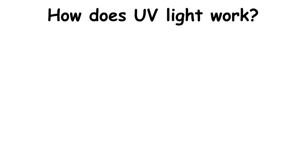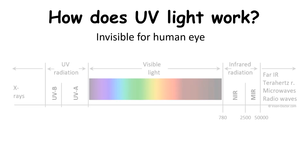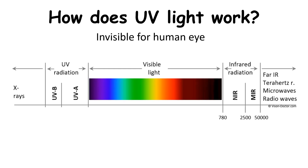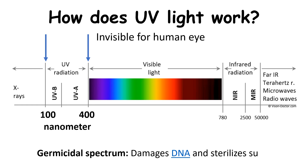Ultraviolet UV light is emitted by our sun, however it's invisible to the human eye. On the electromagnetic spectrum, it's positioned between x-rays and visible light with wavelengths between 100 and 400 nanometers. This spectrum is categorized as germicidal, meaning it damages DNA and sterilizes surfaces with which it comes into contact.